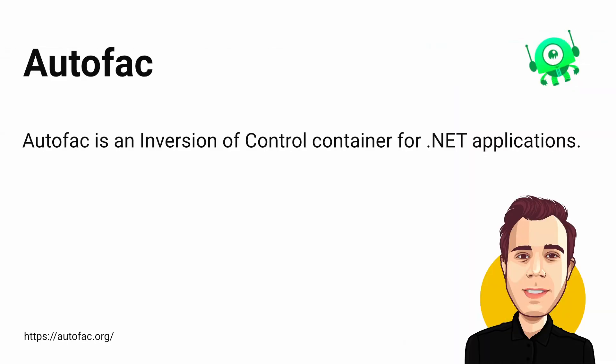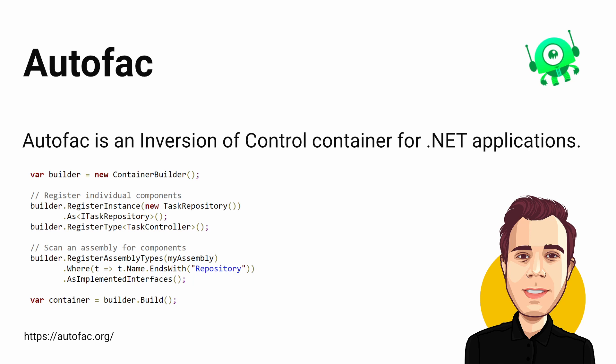Autofac is an inversion of control container for .NET applications. It has a simple but powerful API and supports a flexible module system. For newer applications I usually use the built-in dependency injection container. However, for WinForms or WPF applications based on the .NET Framework, Autofac is a great solution. I have used it in different projects and liked it so much that I made a whole dependency injection series about dependency injection with Autofac on this channel.